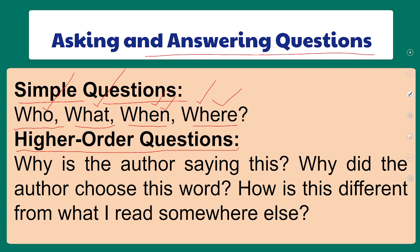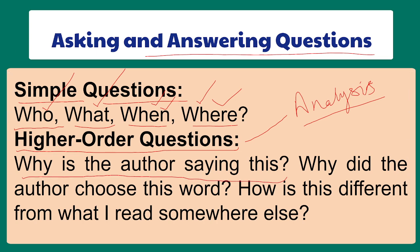Higher order questions are associated with HOTS — Higher Order Thinking Skills. They are called higher order questions because they assess your higher order skills, such as analysis, critical understanding, and similar abilities. For example: 'Why is the author saying this?' — this type of question requires you to find the cause, underlying concept, purpose, or base of something, which can only be addressed through analytical and critical abilities.